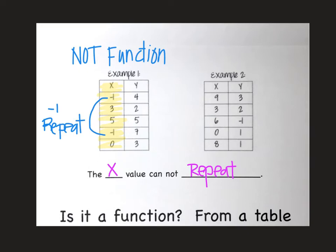Looking over at the right side, I'm going to again only look at the X values. I go down this list. Don't even worry about the other side. I have 9, 3, 6, 0, and 8. All of those are different values. So then I'm going to say this one is a function.